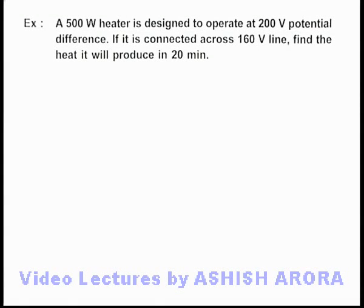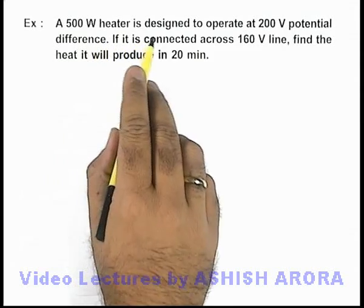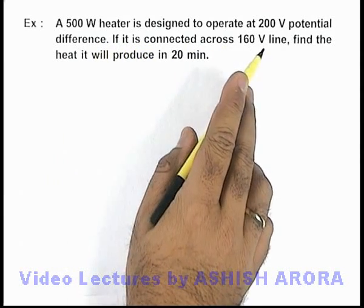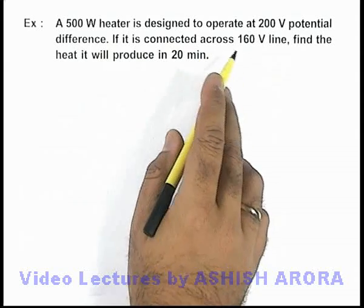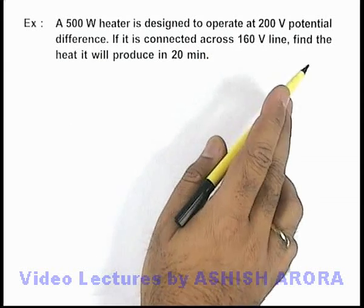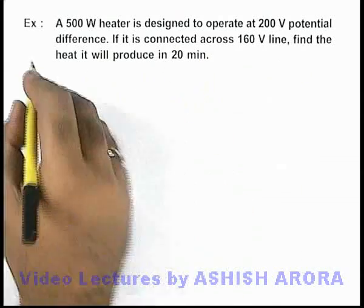In this example, we are given that a 500 watt heater is designed to operate at 200 volt potential difference. If it is connected across a 160 volt line, we are required to find the amount of heat it will produce in 20 minutes.